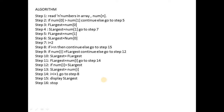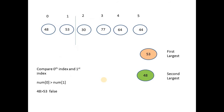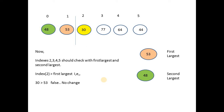Now with an example you will understand better. We have six integers in the array and we follow the same algorithm. Yellow color represents the current index, orange represents the first largest, and green represents the second largest. We compare the 0th index and first index: since index 1 is greater than index 0, index 1 becomes the first largest and index 0 becomes the second largest.